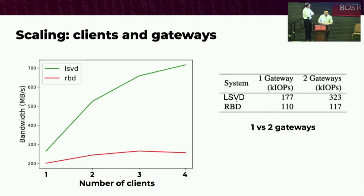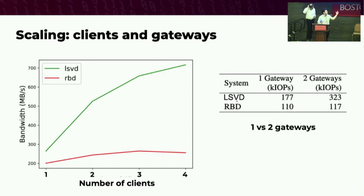This graph shows how we scale with multiple clients and multiple gateways. RBD is very good at letting a single virtual disk essentially take over the entire performance of the Ceph backend—a single virtual disk can very easily saturate the entire available IOPS space. So going from one client to four doesn't really help you scale because a single virtual disk already takes up all available performance. Whereas with LSVD, because of internal map blocking structures, adding more clients and more virtual disks actually improves aggregate performance. Adding a second gateway also essentially doubles performance compared to RBD that has already saturated the backend.